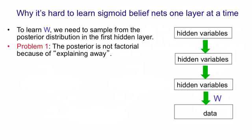First of all, the posterior distribution over the first layer of hidden variables is not going to be factorial. They're not independent in the posterior. And that's because of explaining away. So even if we just had that layer of hidden variables, once we've seen the data, they wouldn't be independent of one another.